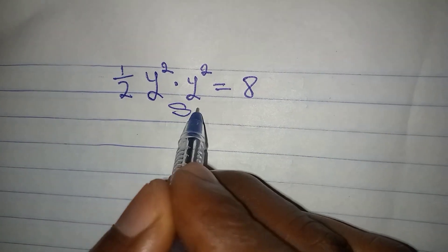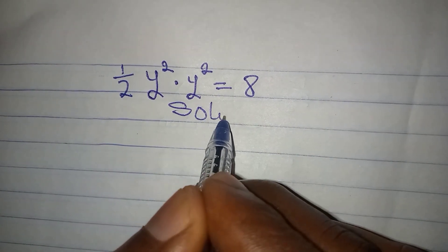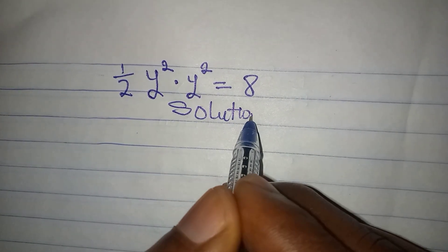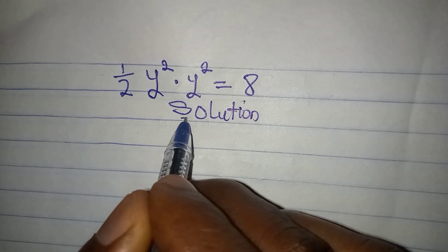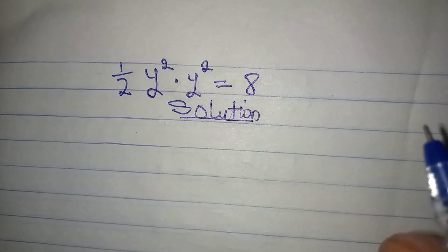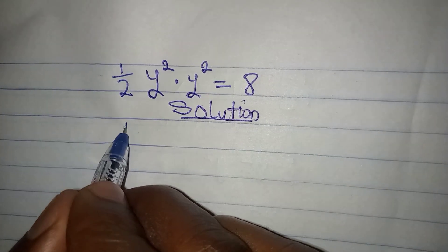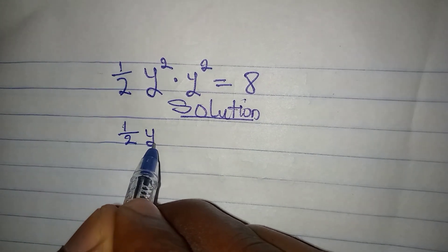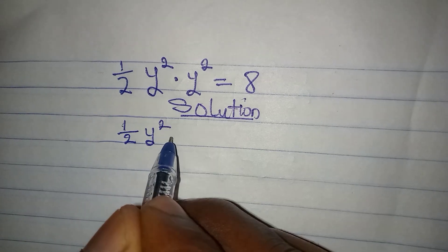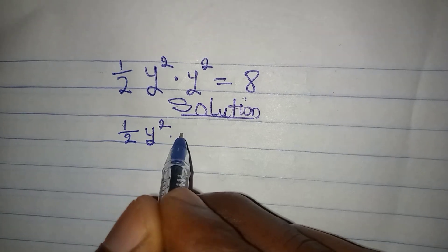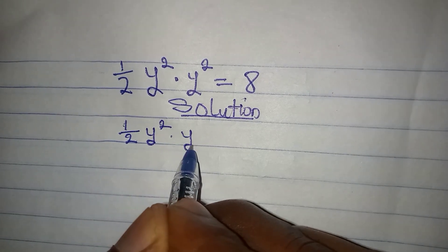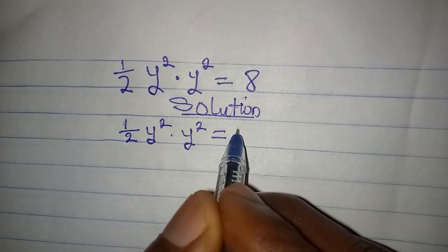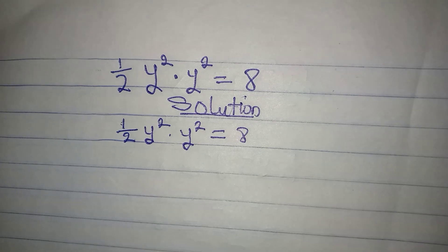Hello everyone, let us provide a solution to this problem: 1 over 2y squared multiplied by y squared equals 8.